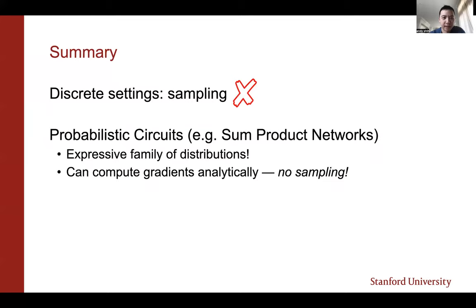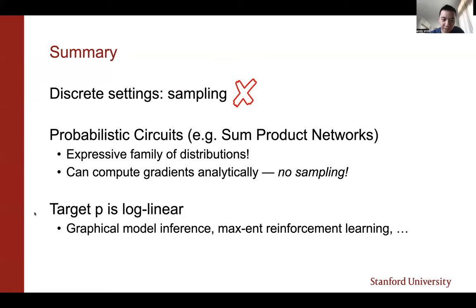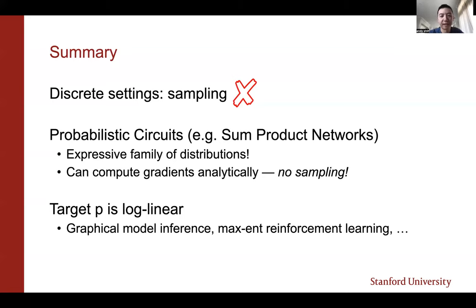To summarize the first work: in discrete settings, taking samples is problematic because you can't backpropagate through them. We use probabilistic circuits like sum-product networks, which are more expressive than mean field or structured mean field but still allow analytic gradient computation — no sampling needed. This works whenever the target p is log-linear, for example graphical model inference, or max-entropy reinforcement learning with a large action space where the reward structure is log-linear.